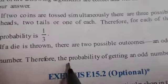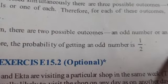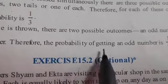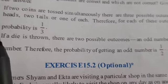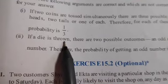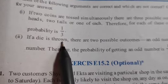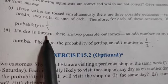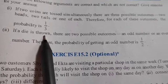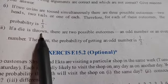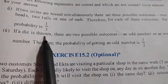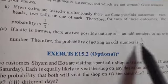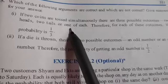Second argument: if a die is thrown, there are 2 possible outcomes — odd or even — therefore probability of getting an odd number is 1/2. This is a true statement. In a die, numbers 1, 3, 5 are odd and 2, 4, 6 are even — 3 each out of 6 total, so 3/6 = 1/2. First argument is false; second argument is true.